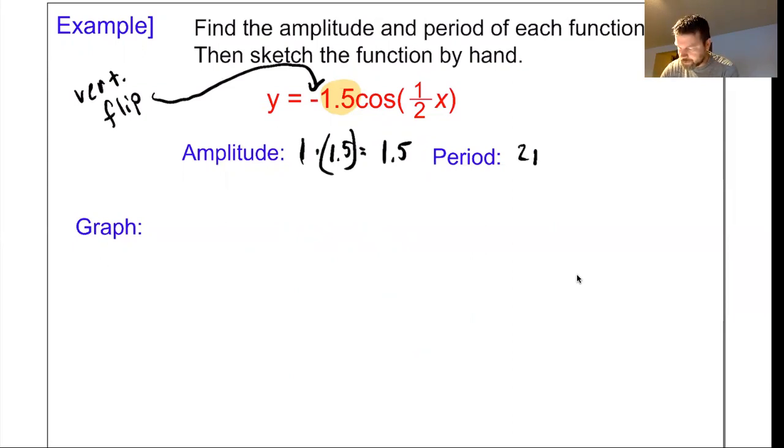All right, period again for cosine is normally 2π. Again, with period, that number is a horizontal stretch or shrink, depending on that number. The factor is just by multiplying by the reciprocal. If I flip one half, I get 2 over 1. So this is actually a horizontal stretch by a factor of 2. 2π times 2 over 1 is 4π. So my period was 2π normally, but after multiplying by that 2, now I've got a period of 4π.